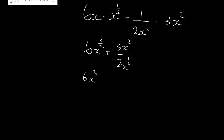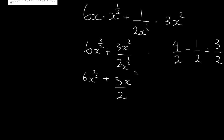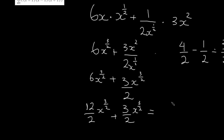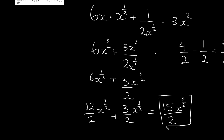We have 6x to the power of 3 over 2, plus 3x squared divided by 2x to the power of 1 over 2. For that second term, x squared over x to the power of 1 over 2 means subtracting exponents: 4 over 2 minus 1 over 2 gives 3 over 2. So it becomes 3 over 2 times x to the power of 3 over 2. Converting 6x^(3/2) to 12 over 2 x^(3/2), then adding 3 over 2 x^(3/2), we get 15 over 2 x to the power of 3 over 2 as the final solution.